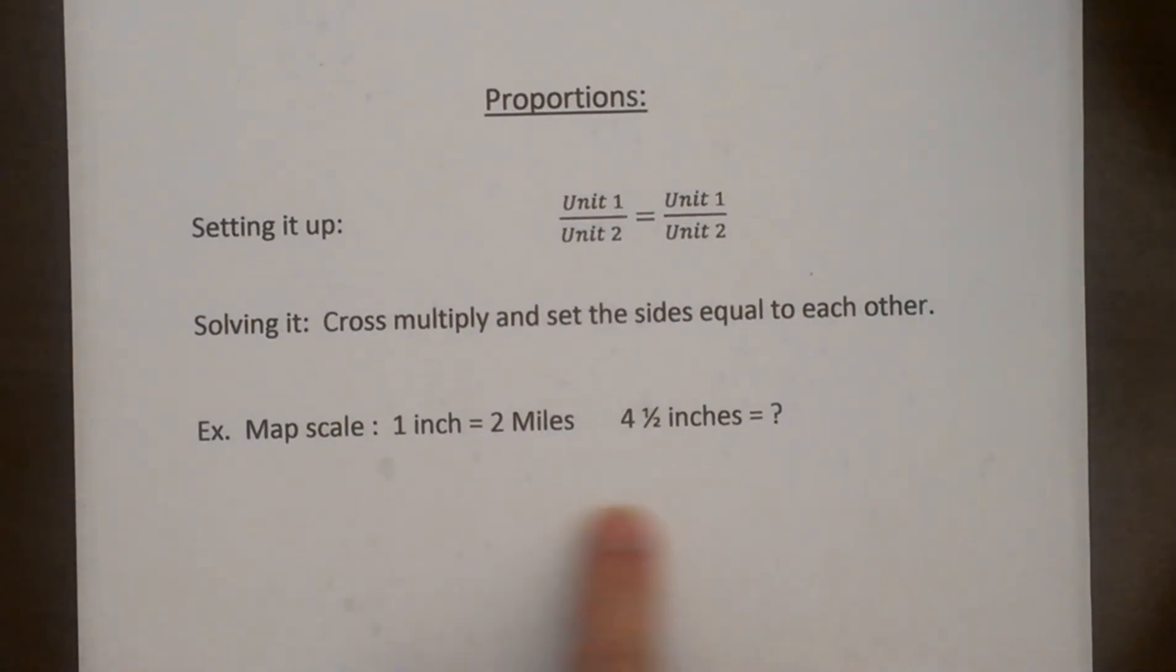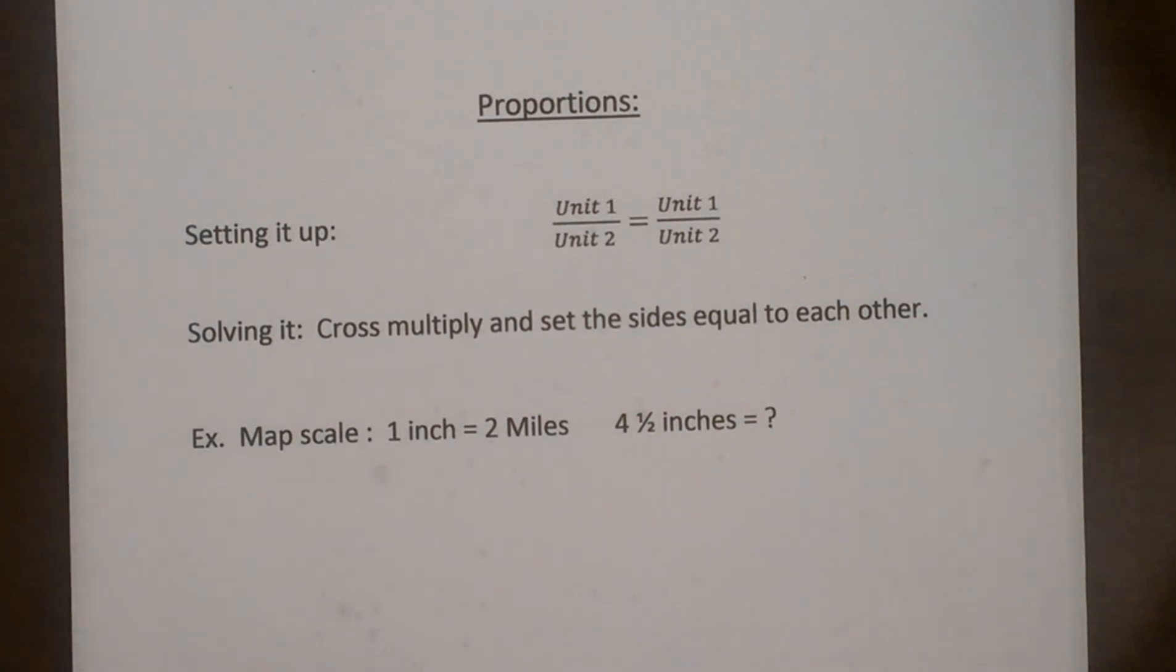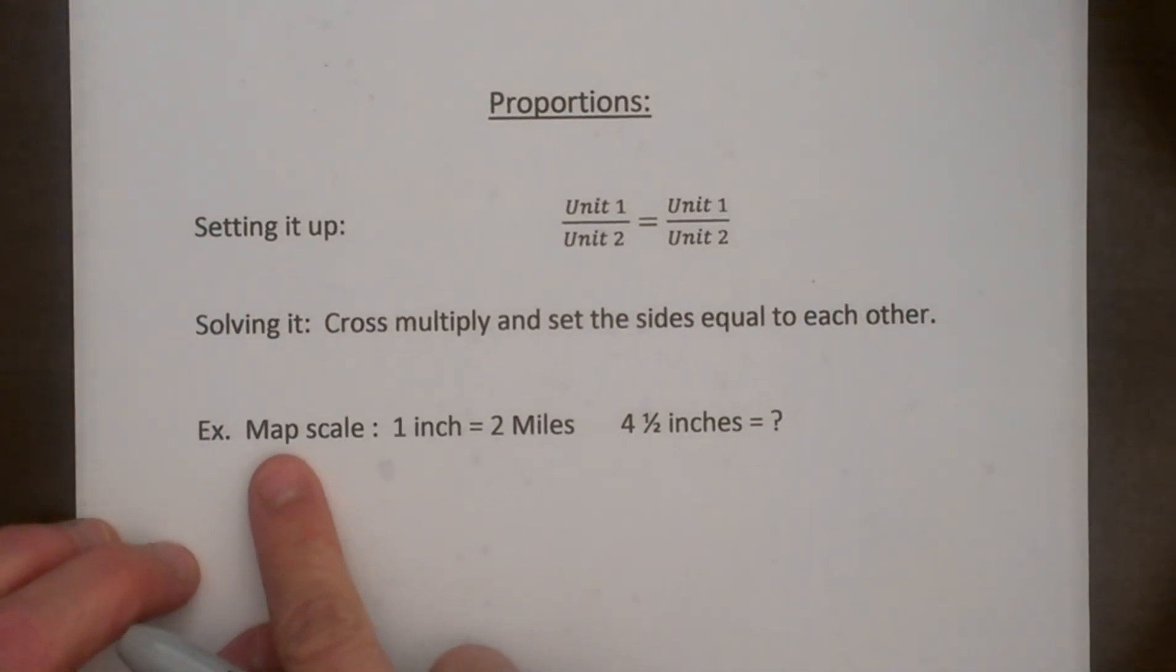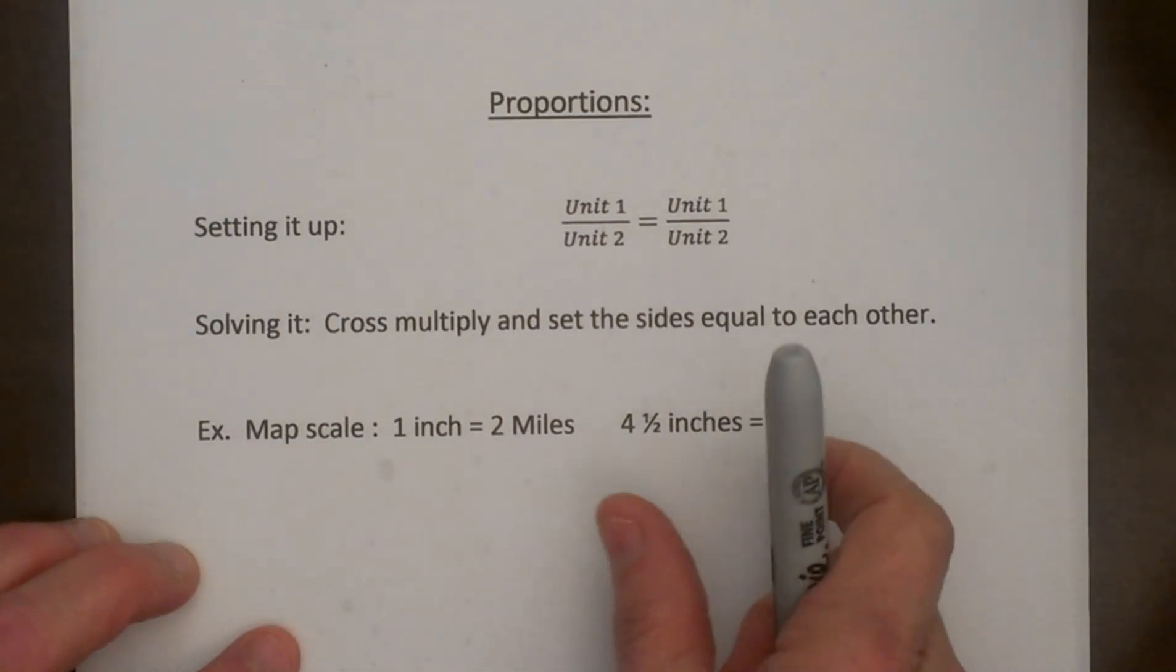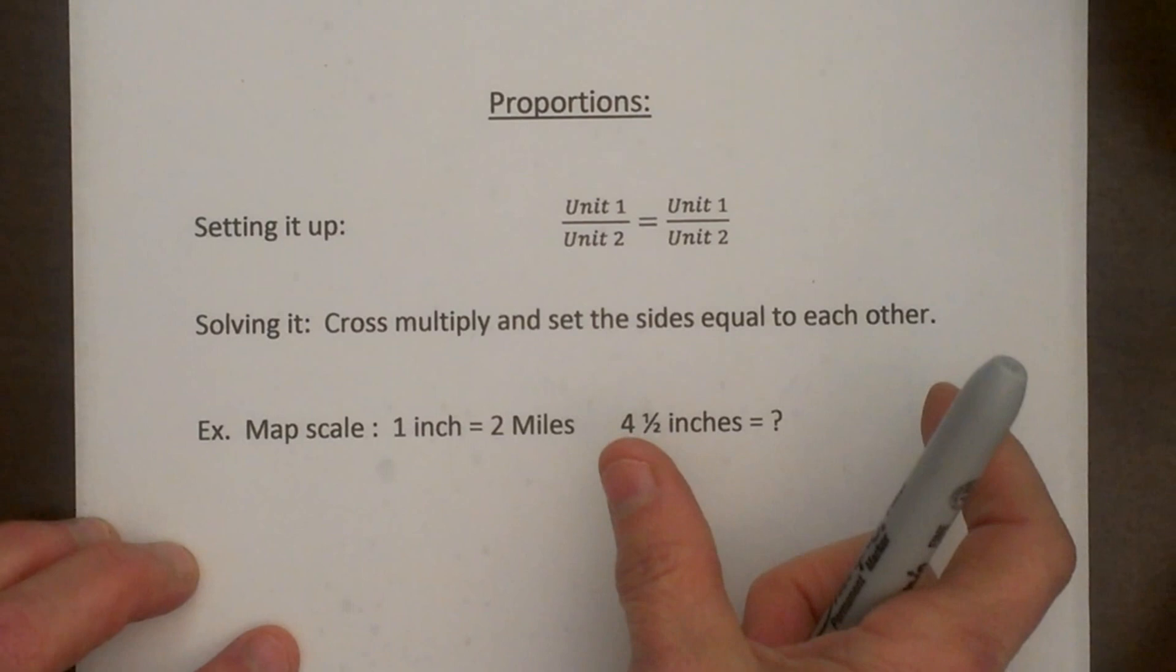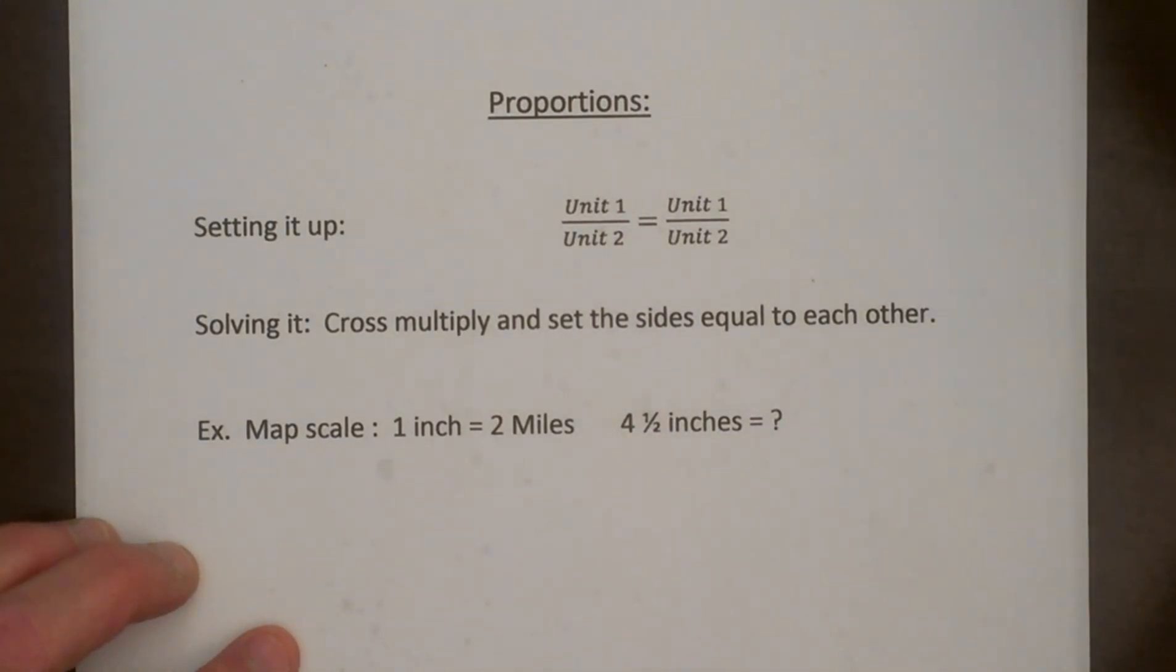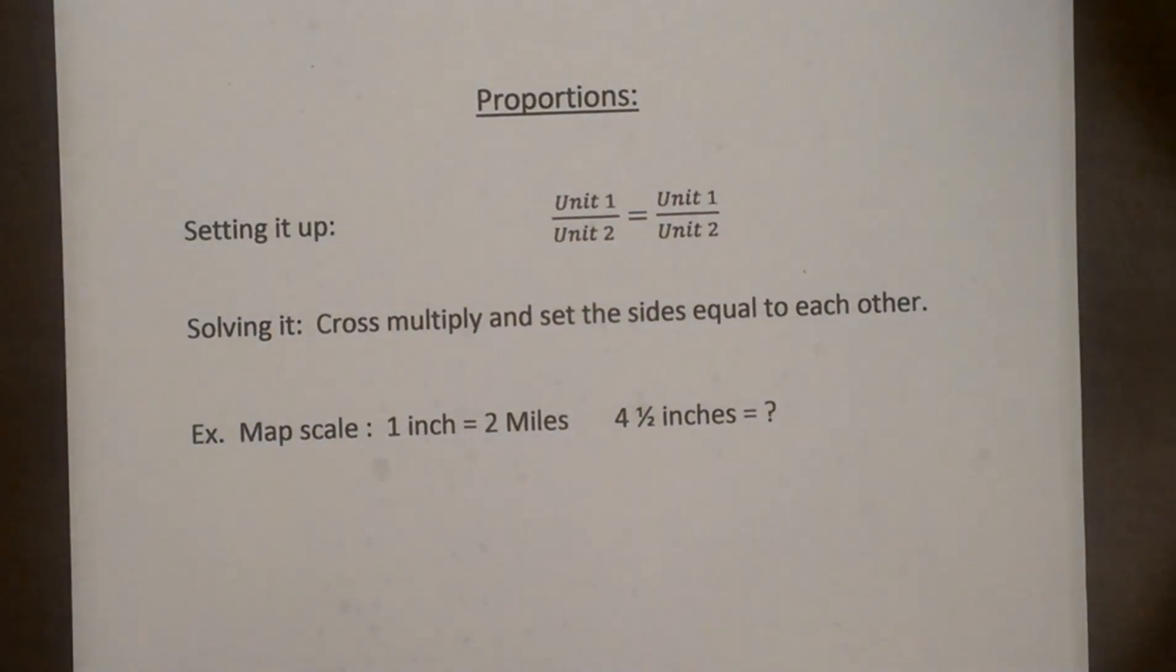So let me give you a quick example of what I mean by setting these up. So let's say you're reading a map and the map says the map scale is 1 inch is equal to 2 miles. Well you measure it and you've measured that distance to be 4.5 inches so you're trying to figure out how many miles that would be. Let's set up our proportion.